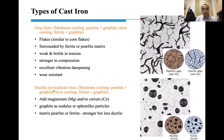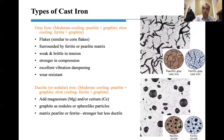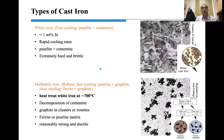Another cast iron is ductile iron, also called nodular iron. With moderate cooling you get perlite plus graphite; with slow cooling, ferrite plus graphite. The key difference is that we add magnesium and cerium, which change the graphite morphology from flakes to spherical particles. That's the only difference between gray iron and ductile iron.